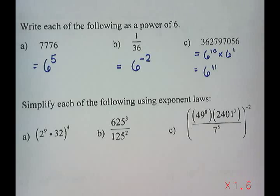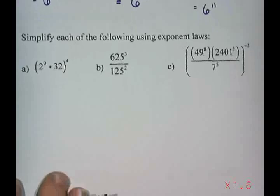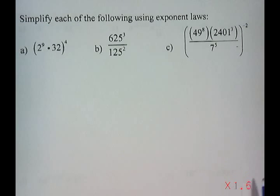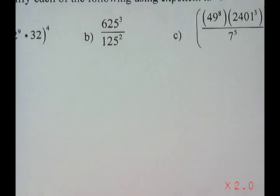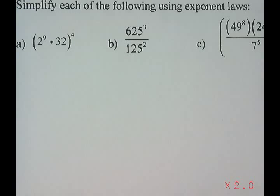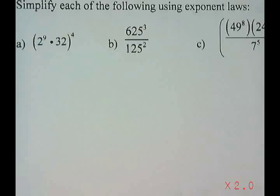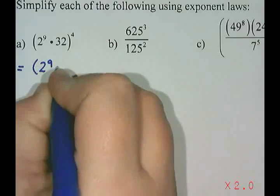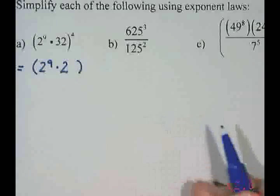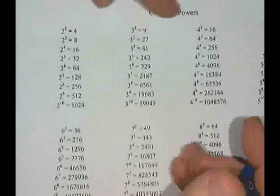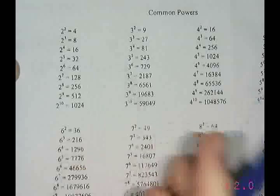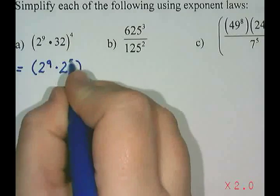One of the ways we use this skill is in exponent law questions where the bases don't match. The first question says simplify two to the nine times 32 to the power of four using exponent laws. To use exponent laws, they must have the same base, and these clearly do not. So I want to write both as powers of two. I leave two to the nine, and check if 32 is a power of two — from the sheet, two to the five equals 32.